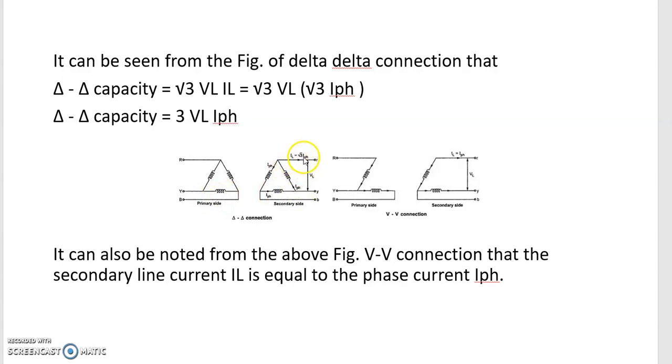In case of delta-delta capacity, VL is the line voltage and the line current is equal to root three IPh. So, total root three VL into root three IPh is going to be three VL IPh.